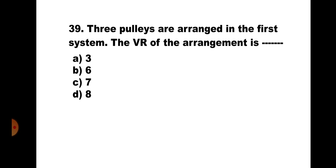Question number 39: Three pulleys are arranged in the first system. The VR of the arrangement is: A) 3, B) 6, C) 7, D) 8. For the first system of pulleys, VR = 2^N, where N is the number of pulleys. With N = 3, VR = 2³ = 8. The correct answer is D) 8.